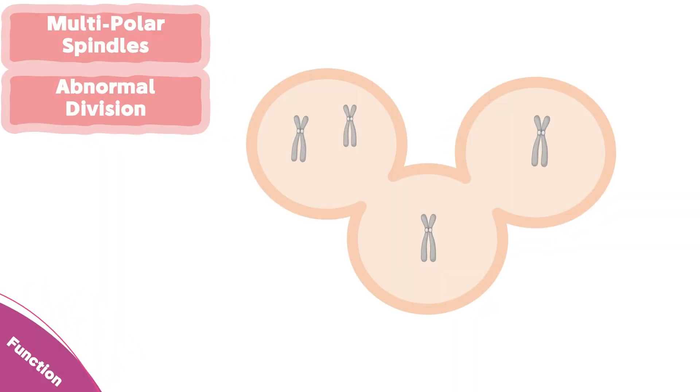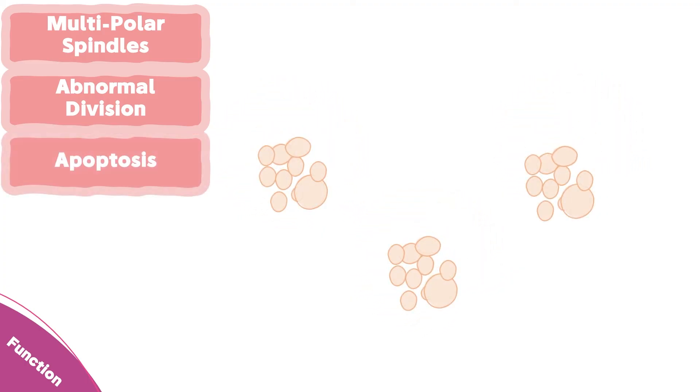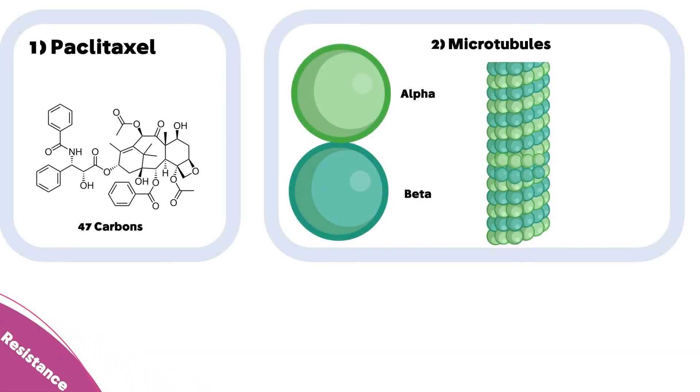This phenomenon will lead to an abnormal division resulting in three cells. However, this unequivalent distribution of chromosomes will induce the cell death by apoptosis.